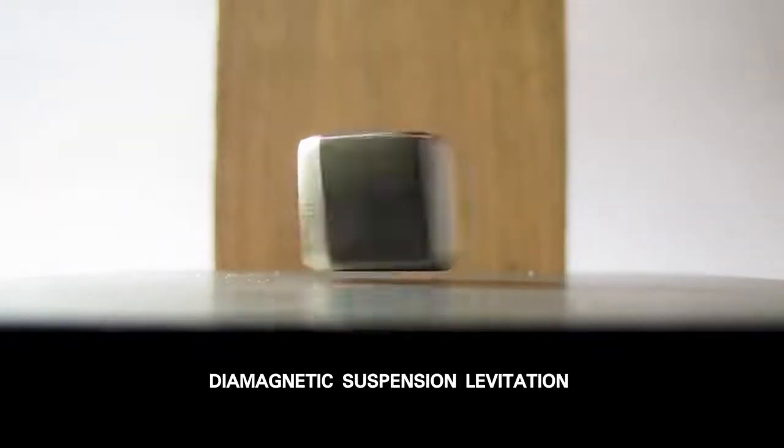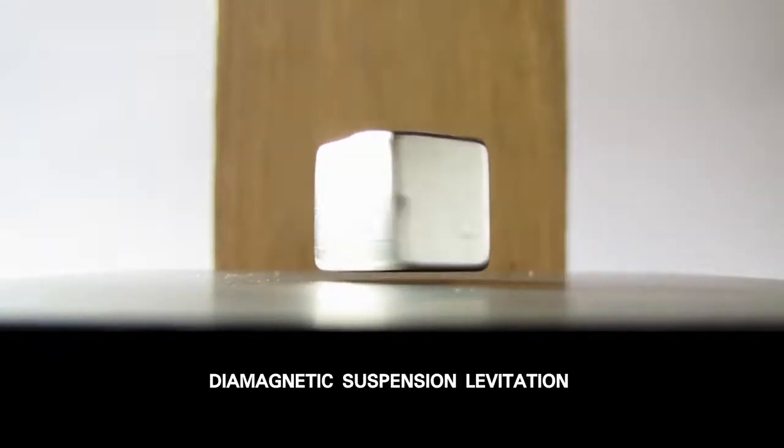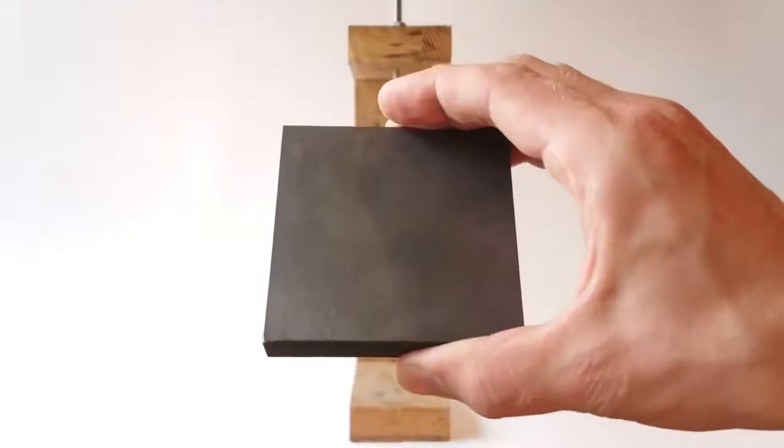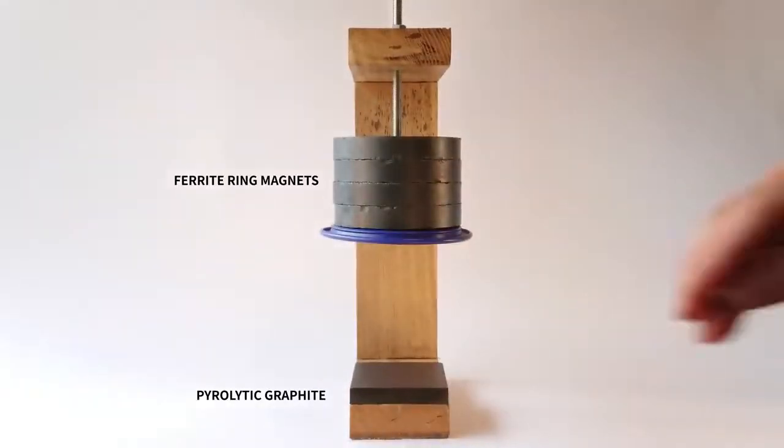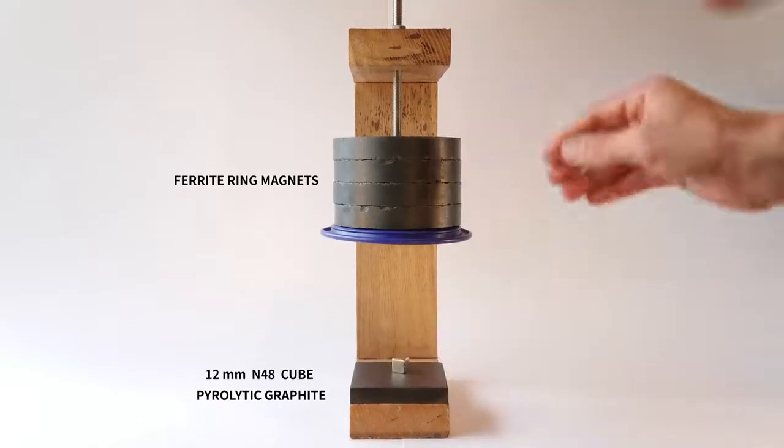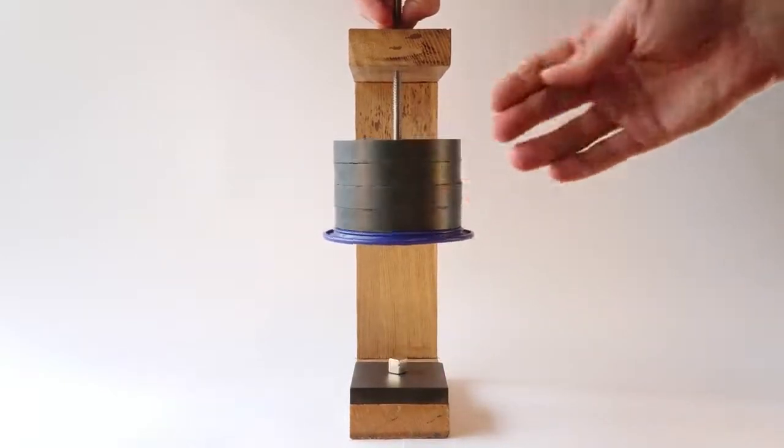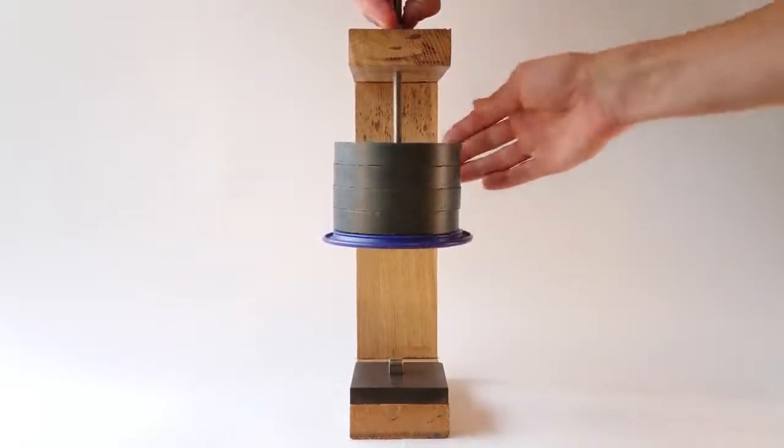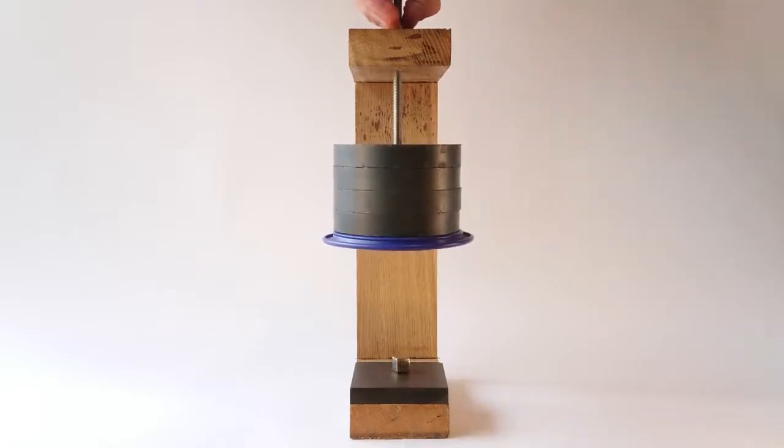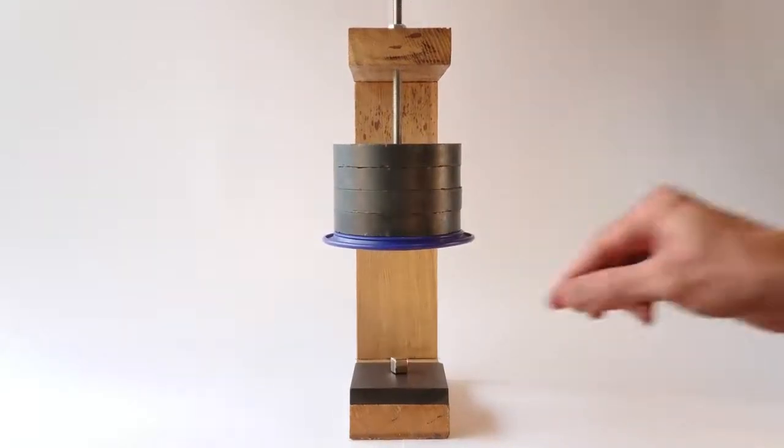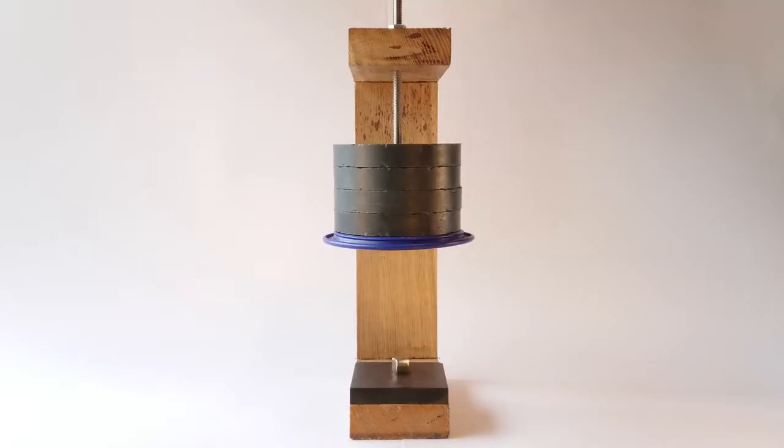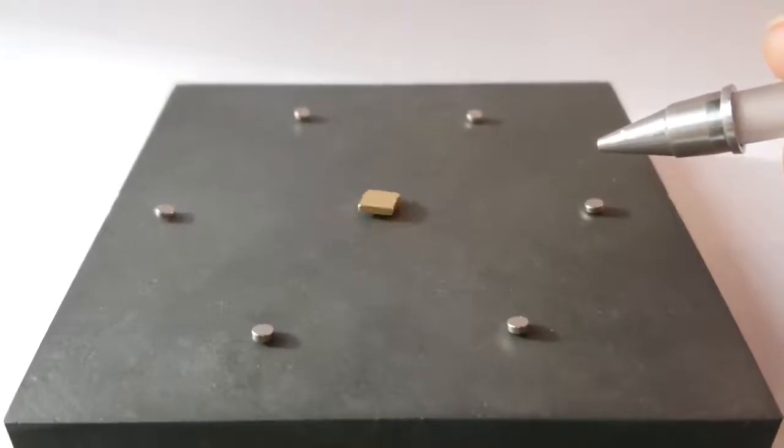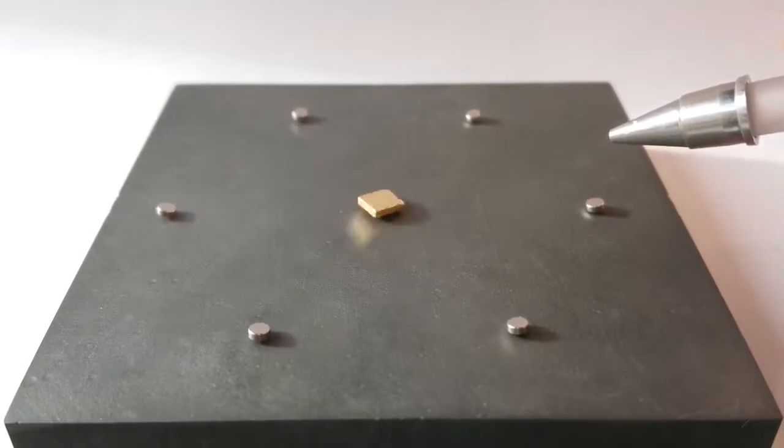Diamagnetism refers to weak repulsion between a diamagnetic material and magnet regardless of its poles. A second magnet can be used at a fixed distance to offset some of the magnet's weight. It is then possible for the diamagnetic effects to support the remaining mass of the magnet and so achieve stable and passive levitation.